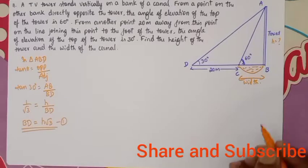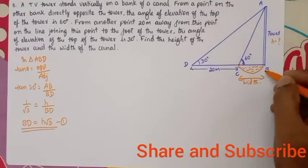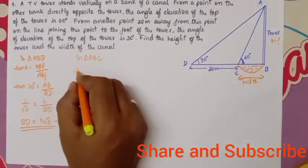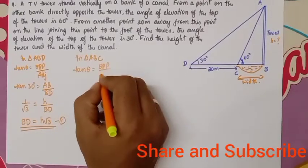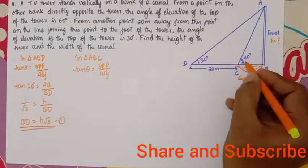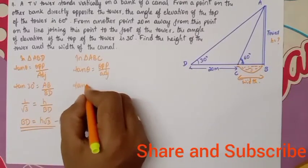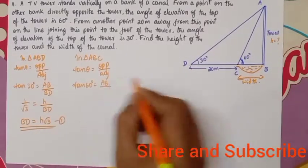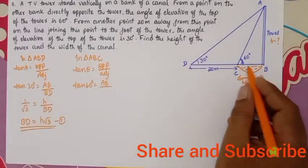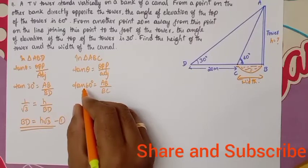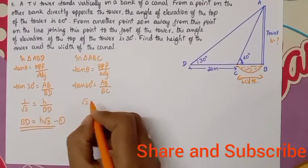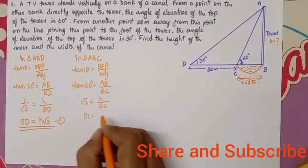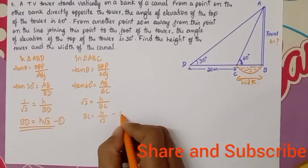Now let me move on to triangle ABC. Using tan θ = opposite by adjacent, here θ is 60 degrees. Tan 60° = AB / BC, so √3 = h / BC. Upon cross multiplication, BC = h / √3. Let me take this as equation 2.